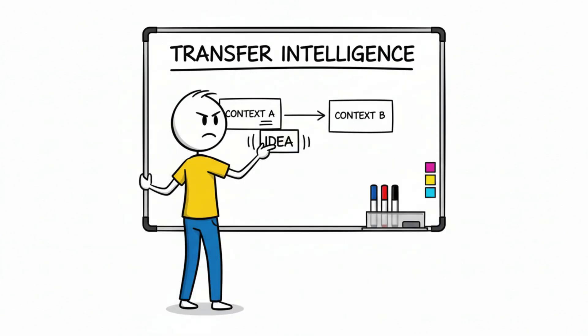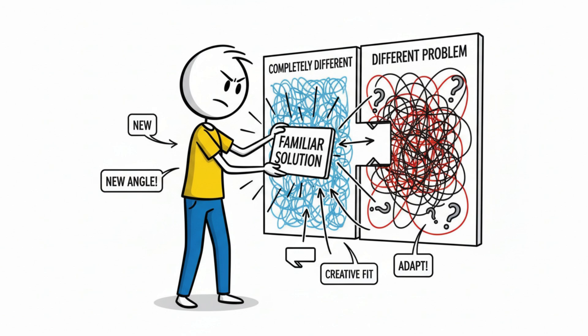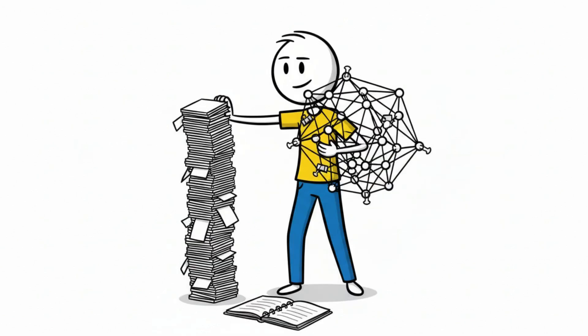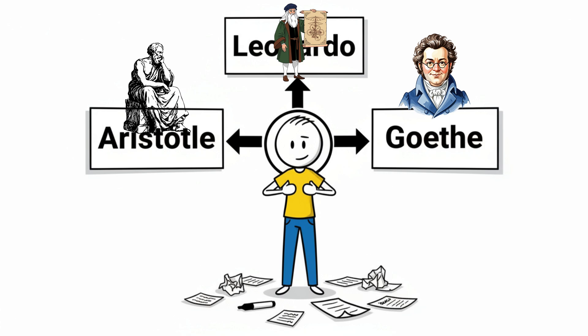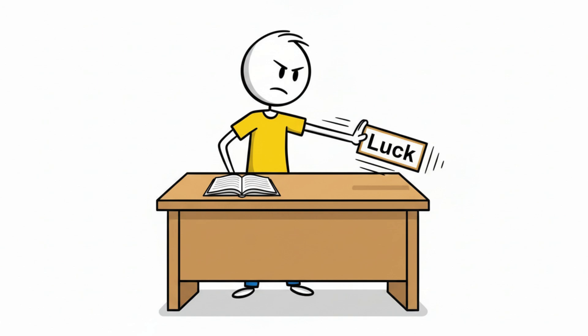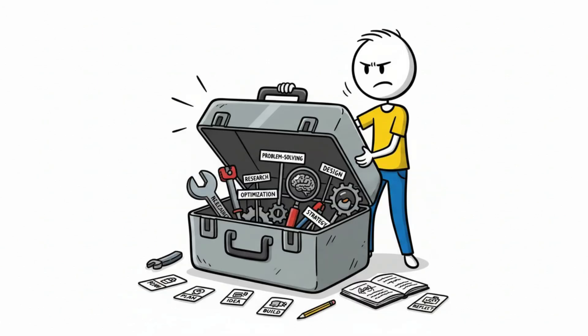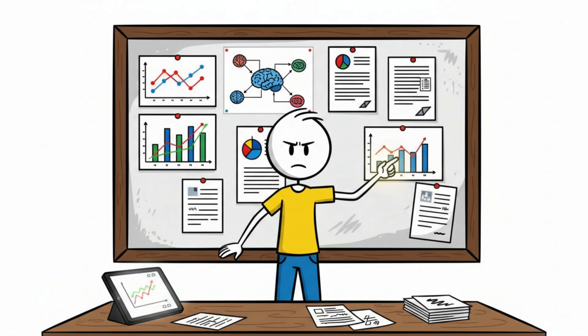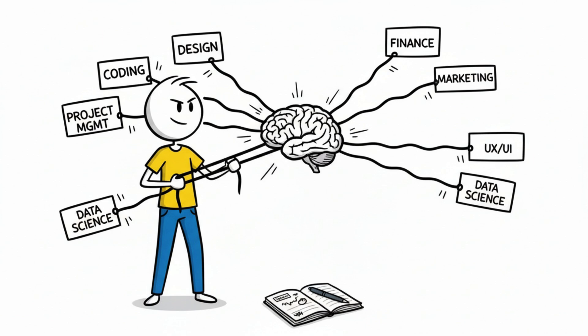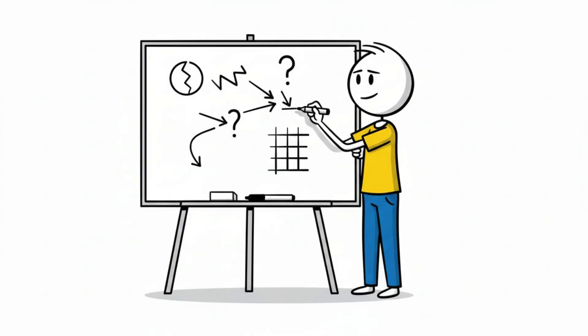This is closely related to what researchers call transfer intelligence. The ability to apply ideas in new contexts instead of memorizing isolated information. It's why polymaths dominated the intellectual history of the world. Aristotle, Leonardo da Vinci, Goethe. They weren't randomly gifted. They built a wide internal toolkit so their mind could move. Modern research supports the same theme. Cross-domain learners tend to show higher fluid intelligence. The ability to reason in novel situations, not just repeat what they've seen before.